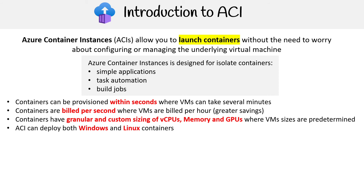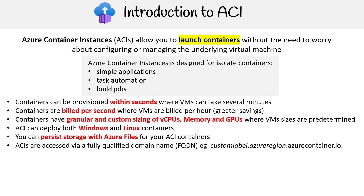ACIs can be utilized for both Windows and Linux containers. You can persist storage with Azure Files using ACI containers — if you have containers or functions, you have to have external storage mounted to persist data. ACIs are accessed via fully qualified domain names, which is one of the things I really appreciate about Azure services, because most of the services are like that.